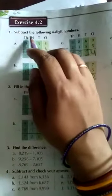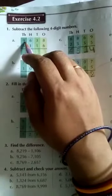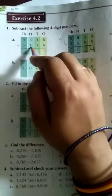Here you see page number 18, Exercise 4.2. Here you see question number 1: subtract the following 4-digit numbers. So you have to subtract the 4-digit number. So 4-digit number you see, here it has been arranged 1000s, 100s, 10s and 1s. It is already arranged.